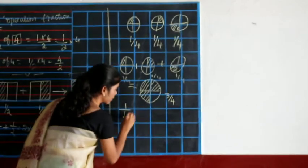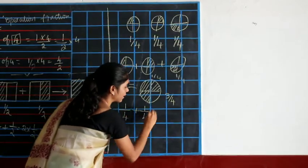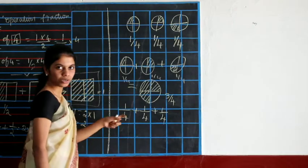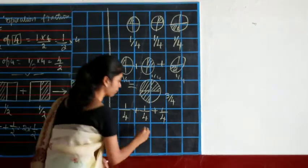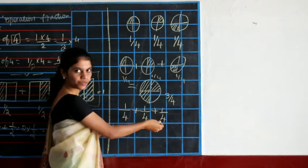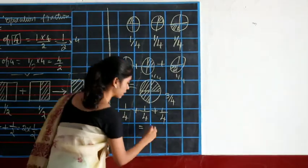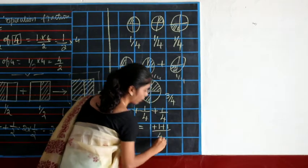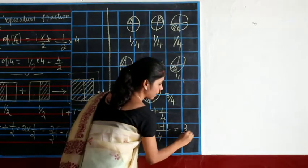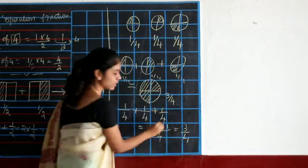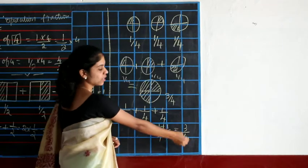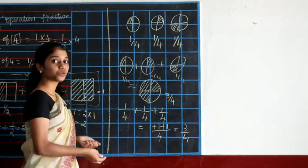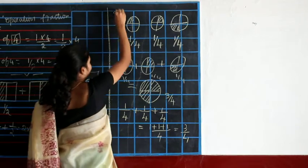You can write this as a mathematical expression: 1 by 4 plus 1 by 4 plus 1 by 4. These are like fractions — same denominator. So 1 plus 1 plus 1 divided by 4 gives you 3 by 4. 1 plus 1 is 2, 2 plus 1 is 3, so 3 by 4. This is how you do it with proper fractions — 1 is lesser than 4, so 3 by 4 is a proper fraction.